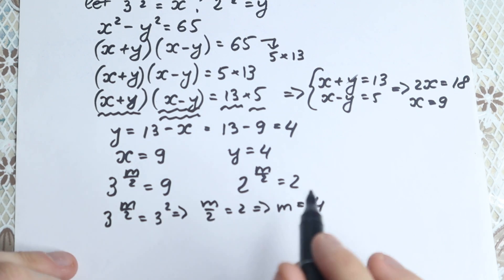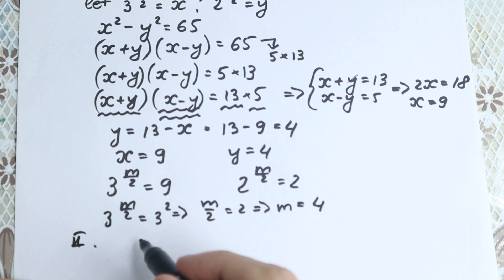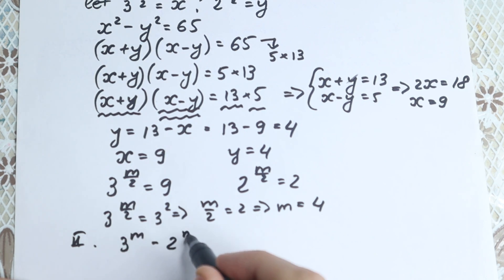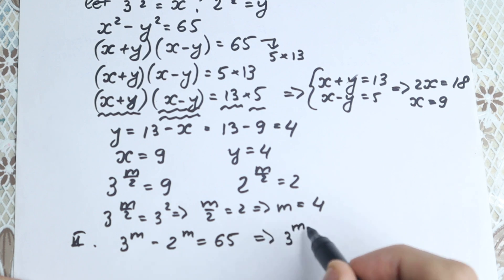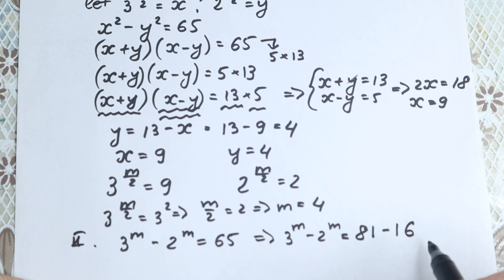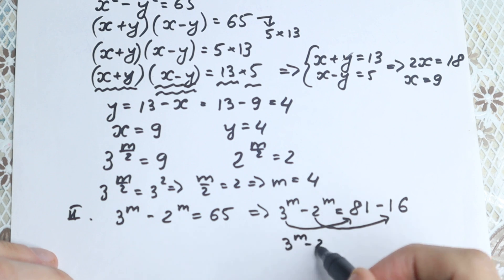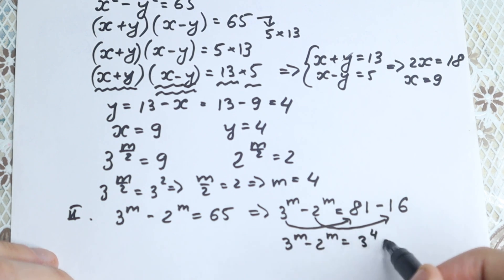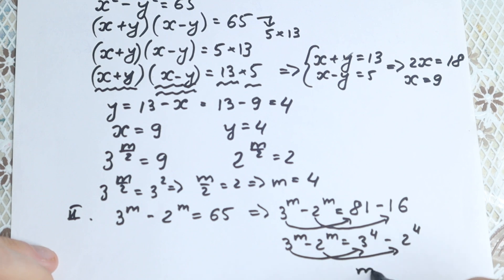Don't skip the video — I'm going to show a really interesting second method. We have 3 to the power m minus 2 to the power m equal to 65. Let's write 65 as 81 minus 16. Because 3 is a good base for 81 (3 to the fourth) and 2 for 16 (2 to the fourth), the only case this works is when m equals 4.